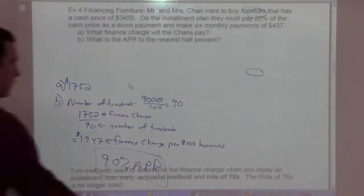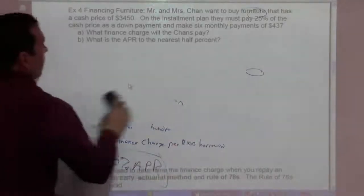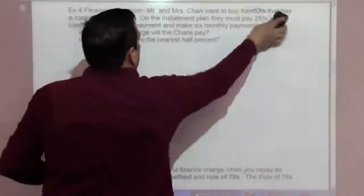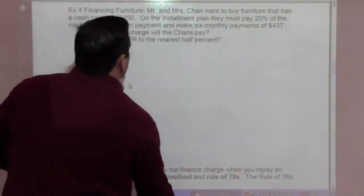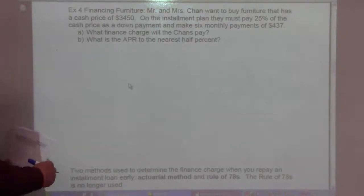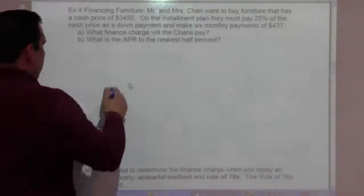Example 4 says Mr. and Mrs. Chan want to buy furniture that has a cash price of $3,450. On the installment plan, they must pay 25% of the cash price as a down payment and make six monthly payments of $437. What finance charge will the Chans pay?